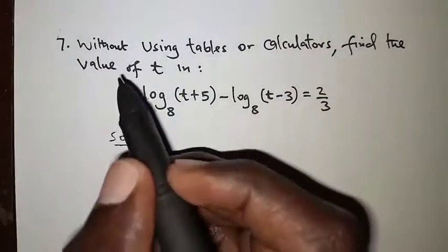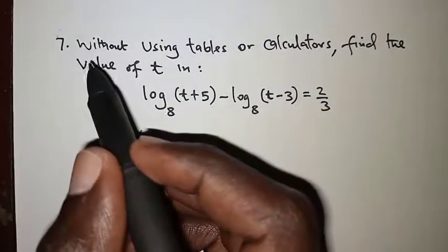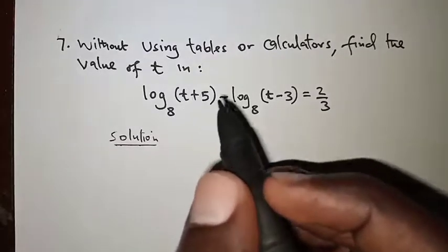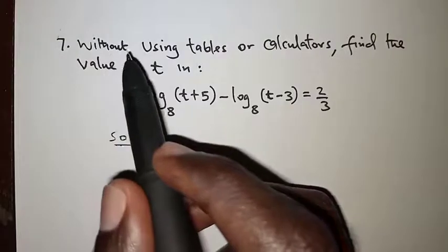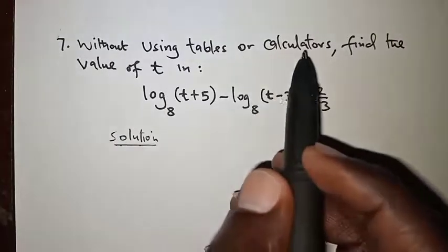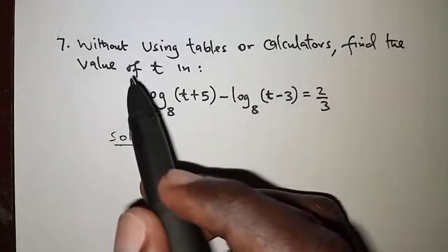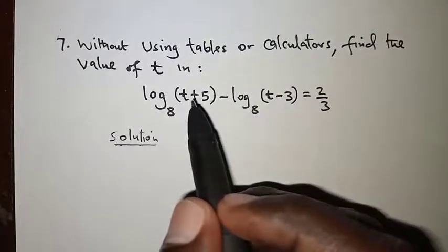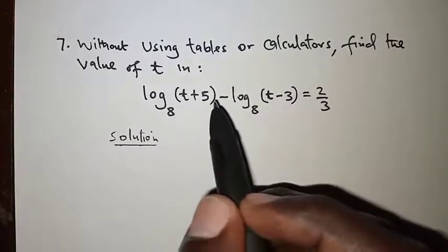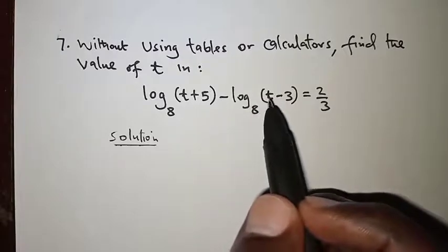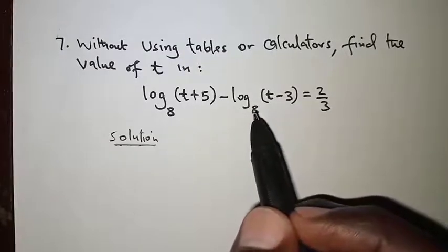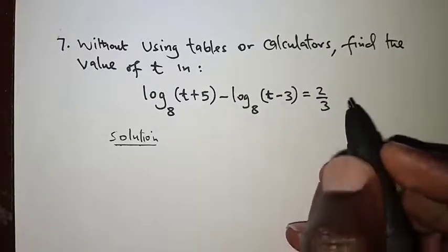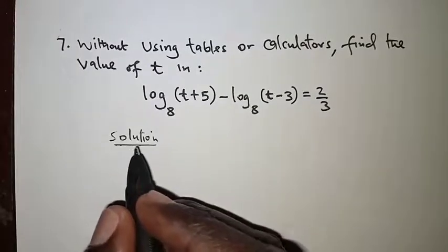Welcome, this is question 7 today and the question is on logarithms. The question reads: without using tables or calculators, find the value of t in — logarithm of (t + 5) to base 8 minus logarithm of (t − 3) to base 8 is equal to 2/3.